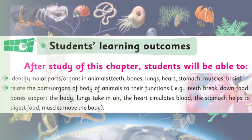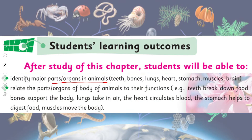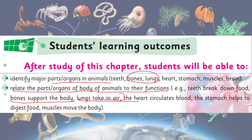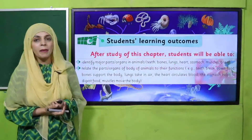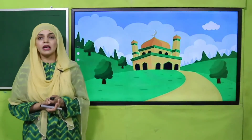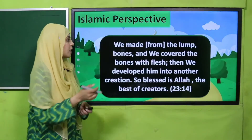In today's lecture, students will be able to identify major parts and organs of animals. We will discuss about bones and lungs, and relate the parts and organs of the body of animals to their function. Today we will discuss that bones support the body and lungs take in air — these are the two functions of these two body parts.